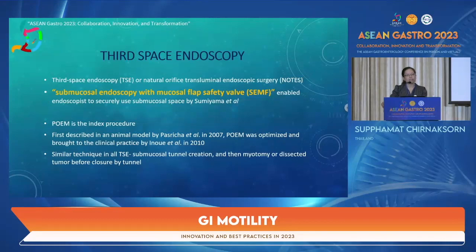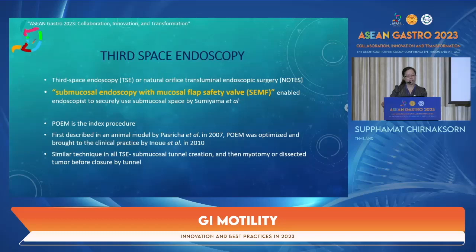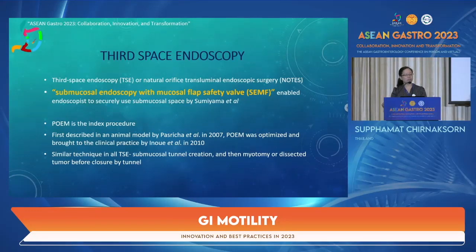Third-space endoscopy originated approximately one and a half decades ago when Professor Sumiyama introduced the technique called submucosal endoscopy with submucosal flap safety valve, or SEMF, to enter the peritoneal cavity and mediastinum, with the defect closed using a mucosal flap. After this, POEM — per oral endoscopic myotomy — became the index procedure, first described in animal models in 2007, then optimized and brought to clinical practice by Professor Inoue in 2010.